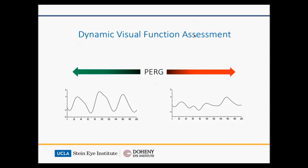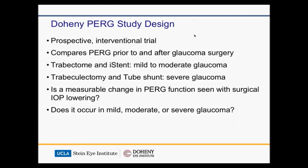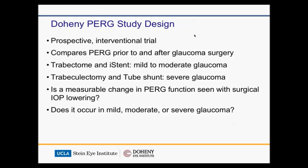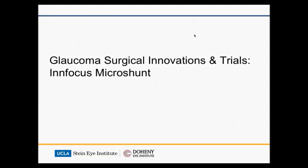The PERG is a functional test, but unlike visual field, which measures loss of function due to cell death, it shows cell function under stress rather than due to death. If you change the stress on cells by decreasing IOP, you can reverse this dysfunction and see a normalization of the PERG. Our trials are looking at patients undergoing either a MIGS procedure for mild to moderate glaucoma, and patients with more advanced glaucoma undergoing trabeculectomy and tube shunt, examining pressure reduction and its effect on the PERG — whether we can show reversal in mild and even advanced patients.